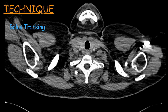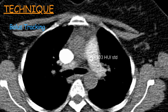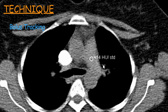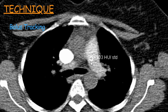In our center we generally use bolus tracking to perform CT pulmonary angiogram. In this method, a region of interest, also called ROI, is placed in the main pulmonary trunk, and then sequential axial images are acquired at this level until the contrast density — the Hounsfield unit in this area — reaches the desired level, which then auto-triggers the scan. You can see an ROI has been placed and multiple axial images acquired until the desired density is reached, at which point the scan starts on its own.